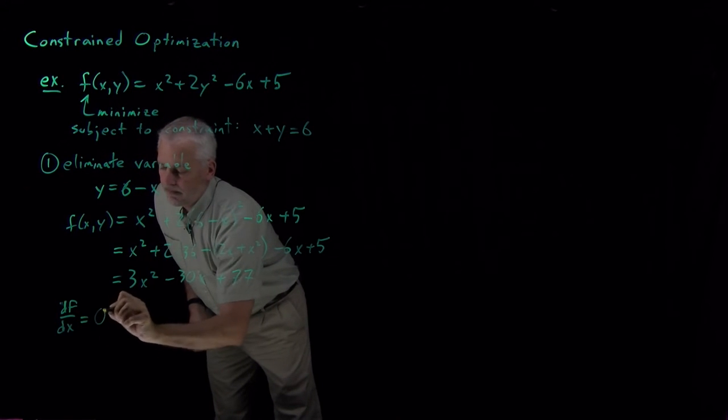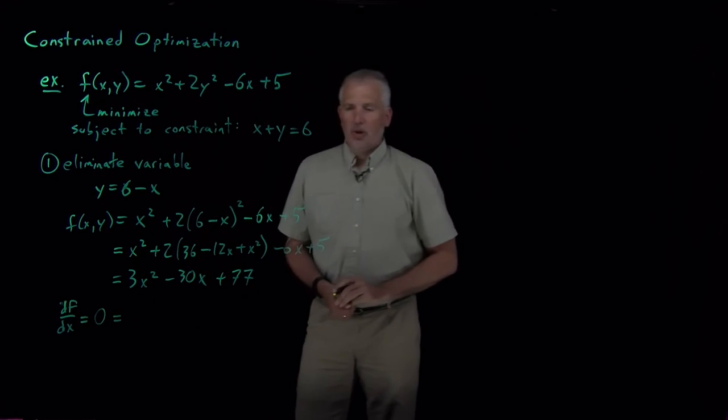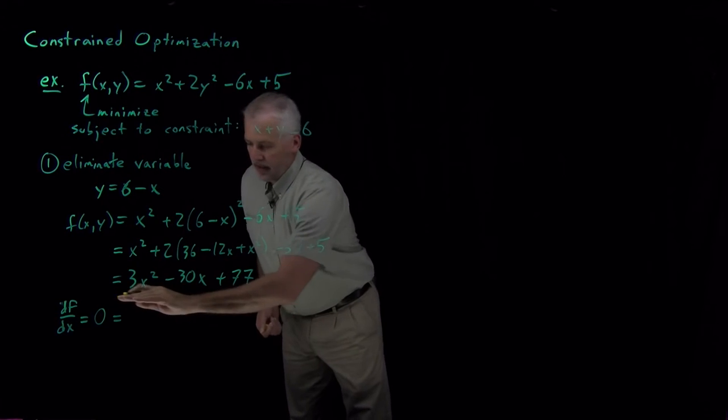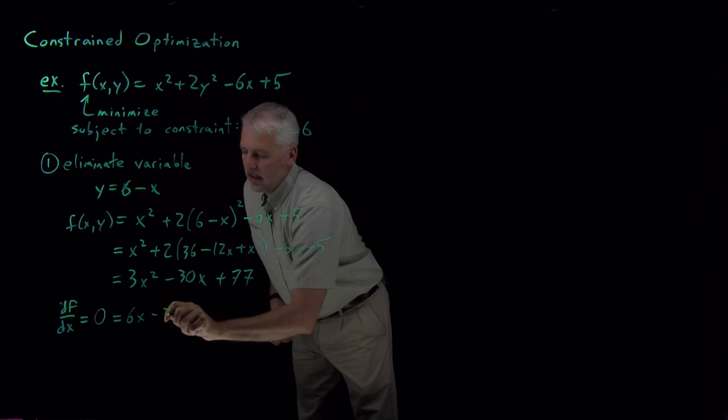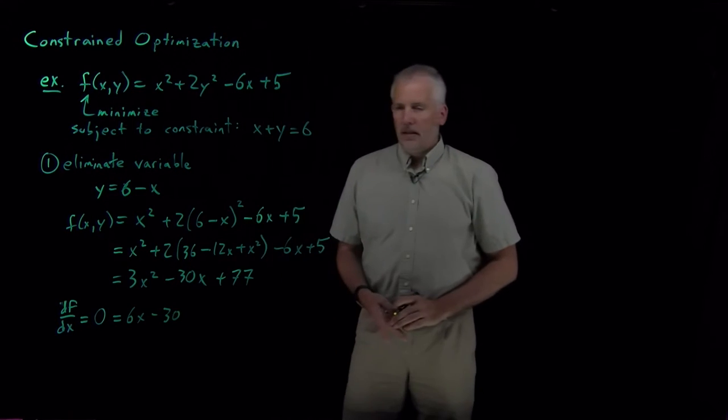So the derivative of that function with respect to x, if I set that equal to 0, I'm looking for the place where the derivative of this function, or 6x - 30, is equal to 0.